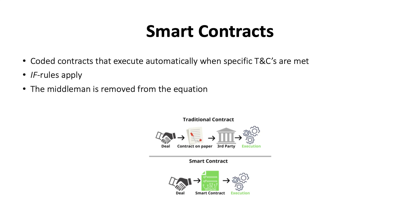Here are some examples of smart contracts: if you give me your PlayStation, then I will give you 0.2 Ether. If you reach 100,000 views on YouTube, then 10 Ether will be transferred to your account. If the Springboks beat New Zealand by more than eight points this weekend, then I will send you one Ether.